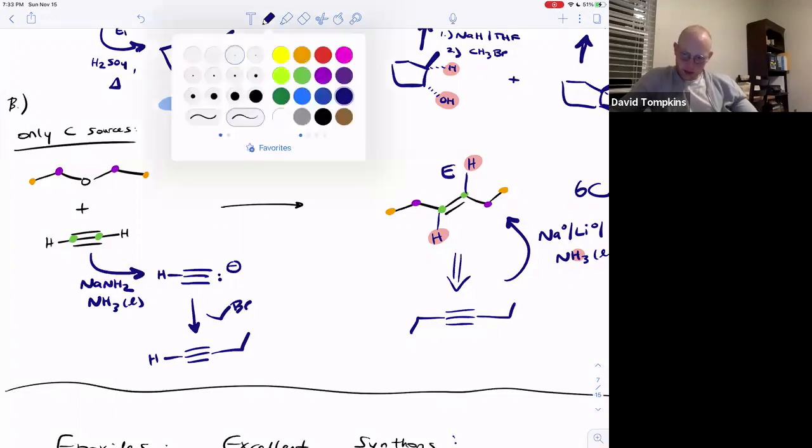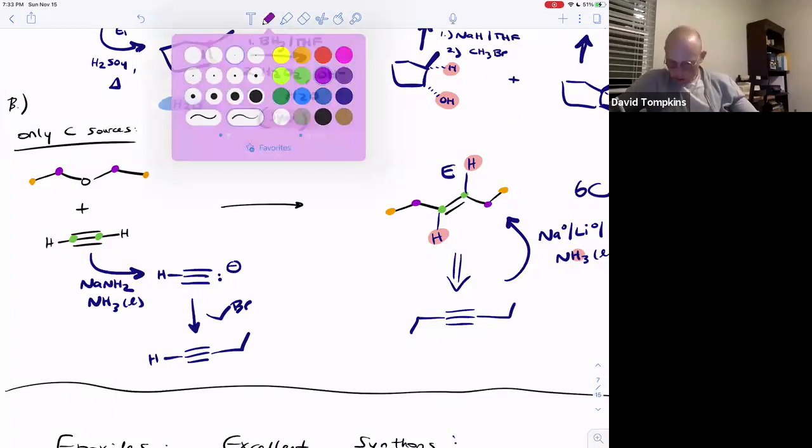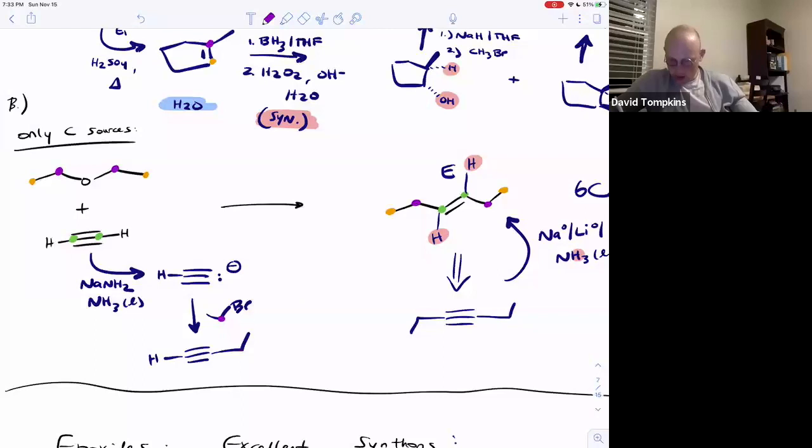And the carbon that was bound to the ethyl is now, or was bound to the bromide, excuse me, is now here. So this was not a carbon source we were given, but diethyl ether was. And you guys now know how to turn ethers into alkyl bromides by addition of HBr and ether cleavage. That's an SN2 mechanism.